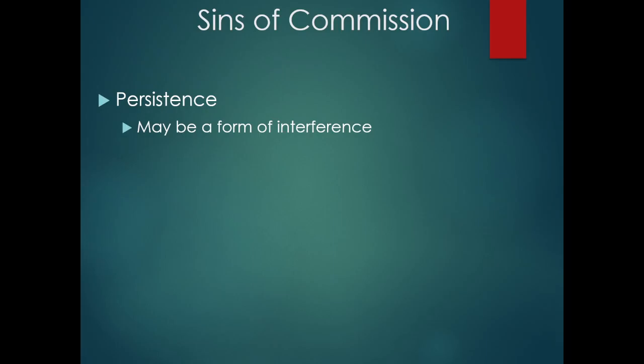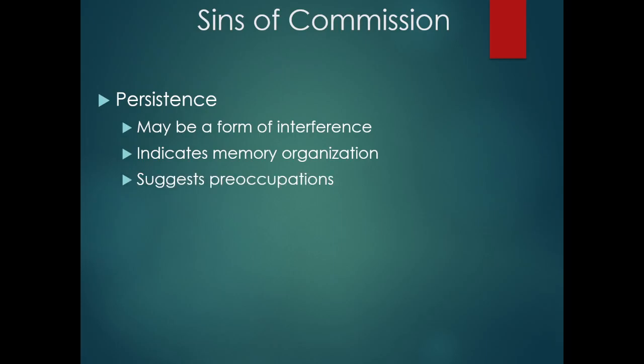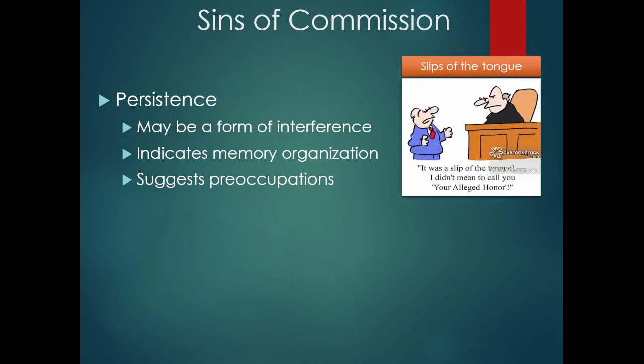Persistence could be described as a form of interference. It indicates that there is organization to memory — you don't just have a series of unrelated things stored in your brain. Persistence can also suggest what you're preoccupied by, what keeps coming to mind. For example, slips of the tongue — or Freudian slips — are examples of persistence where something you're trying not to think about slips in and interferes with what you are trying to retrieve or think about. The lawyer says to the judge: 'It was a slip of the tongue — I didn't mean to call you Your Alleged Honor.'